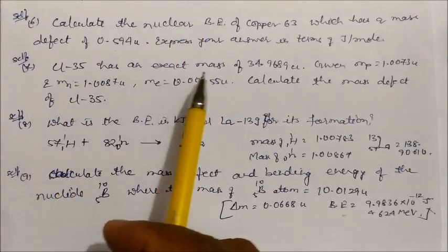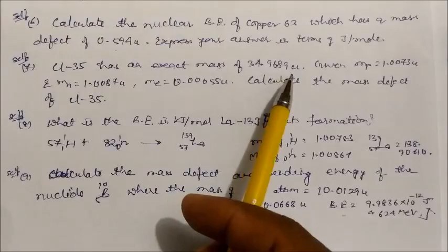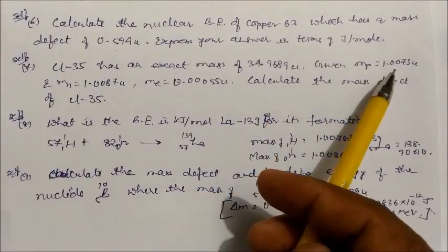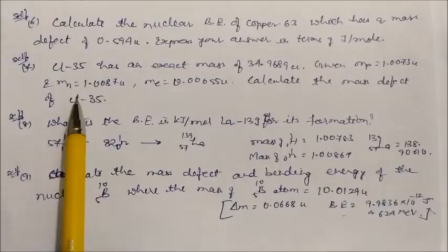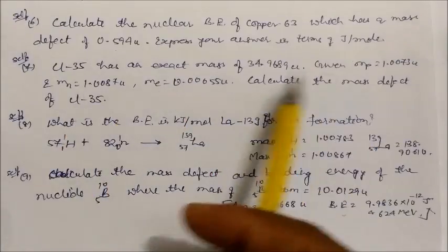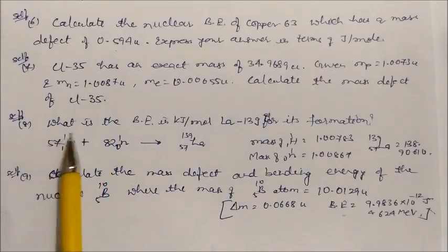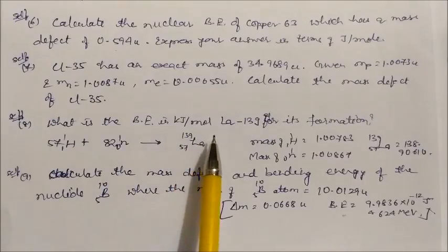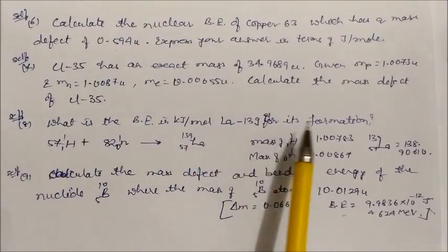Similarly, Cl-35 has an exact mass of 34.9689 u. The mass of the proton is 1.0073 u and the mass of the neutron is given. Calculate the mass defect of Cl-35 and also find the binding energy in kilojoules per mole.